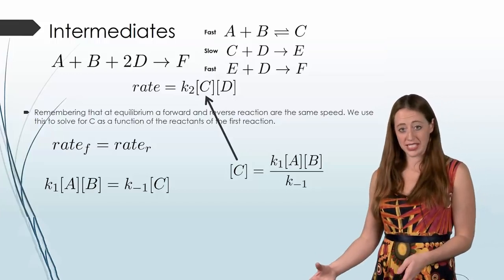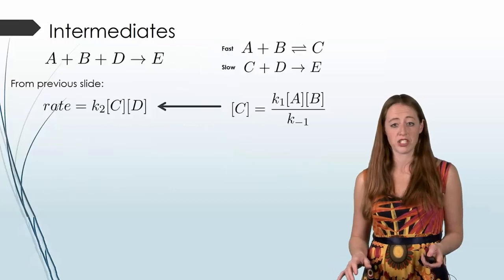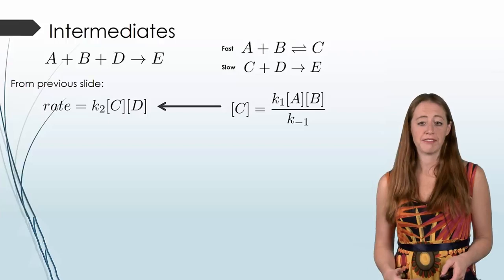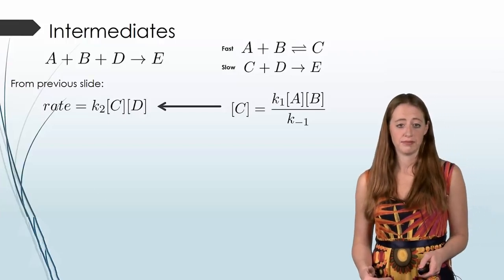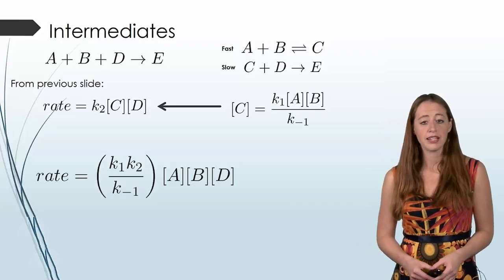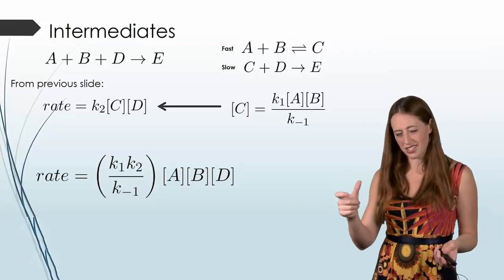So switching to a new slide, but just kind of keeping all of that information, just rearranged a bit. So this is all the same information. Now we can fill it in, and we can do this. Now typically, because k's are just constants, we don't necessarily need to keep all of these k1s, k2s, k inverse, or anything like that.